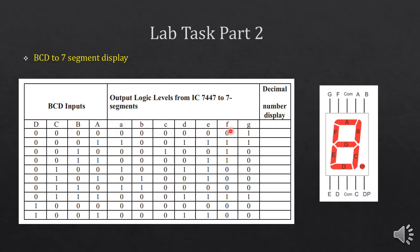Here 0 is considered as high while 1 is considered as low for this decoder IC. What it actually means is that the G LED will be off while A, B, C, D, E, F will be on, so it will display 0 on the 7-segment display. Similarly, if you apply 1001, D and E will be equal to 1 while the others are 0, meaning D and E LEDs are off and the number displayed will be 9.